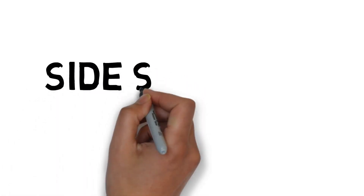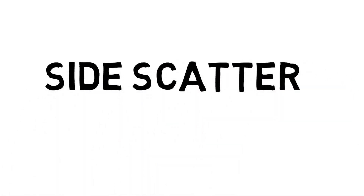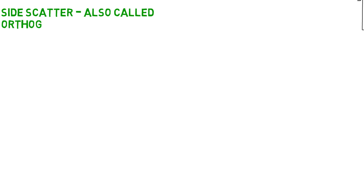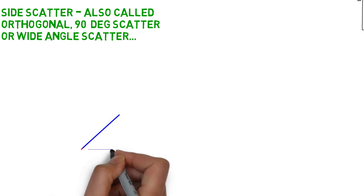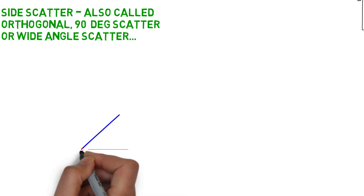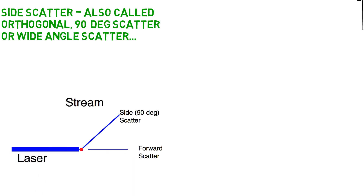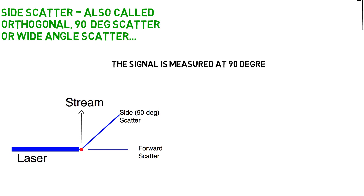Let's talk about side scatter. We've seen several names for side scatter: one is orthogonal scatter, another is 90-degree light scatter, and sometimes people speak about wide-angle scatter. If we follow this diagram, you can see that the light measured for side scatter is going in the same pathway as fluorescence, at a 90-degree angle from the laser beam.